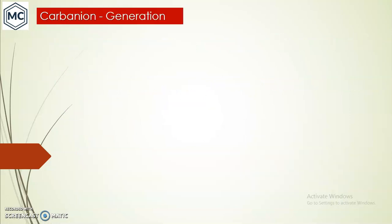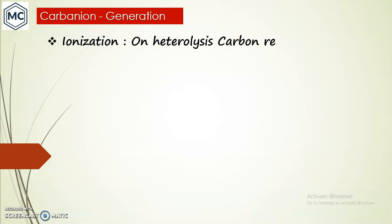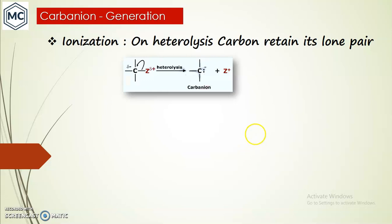Carbanions and carbocations are generated by ionization via heterolytic bond fission. On heterolysis, when carbon retains its lone pair, it generates a carbanion. When carbon loses its lone pair, it forms a carbocation. So here, carbon is retaining its lone pair on heterolysis.